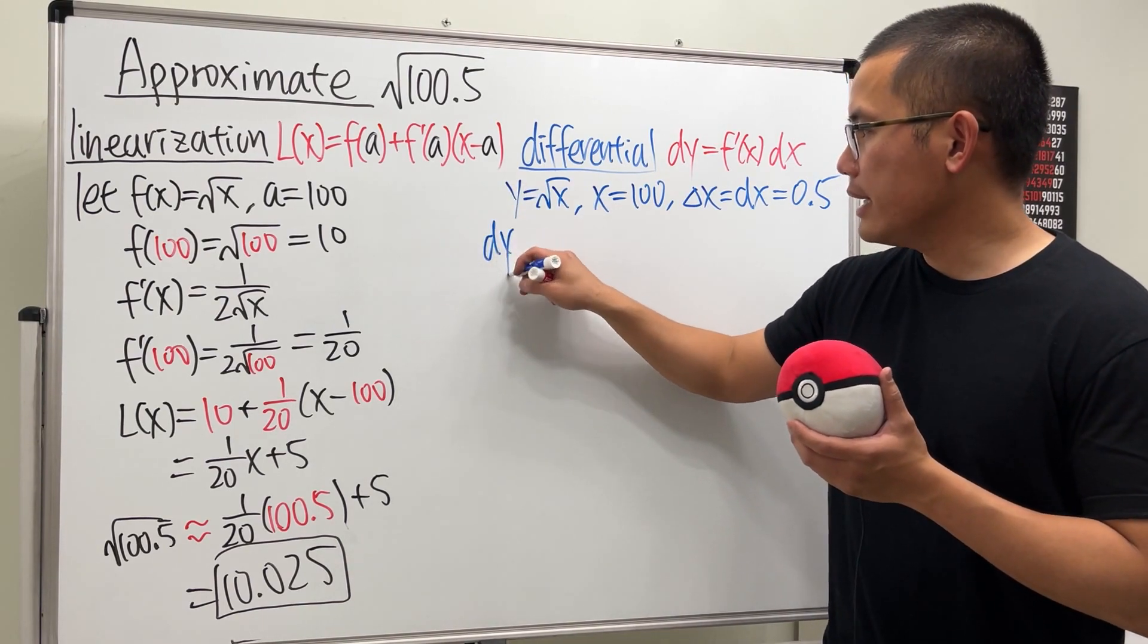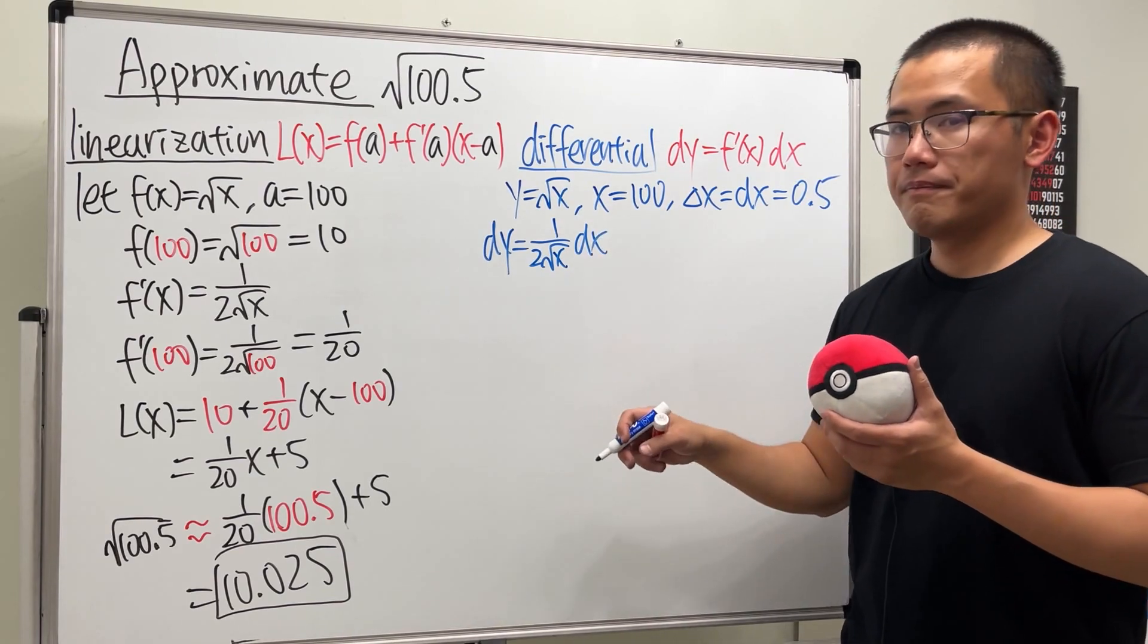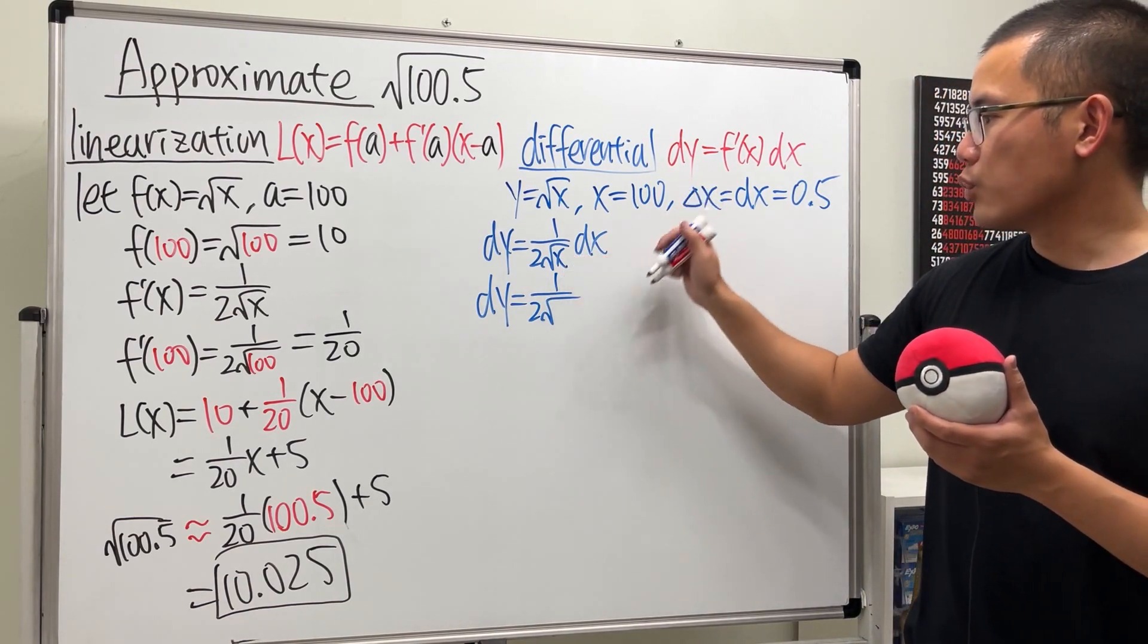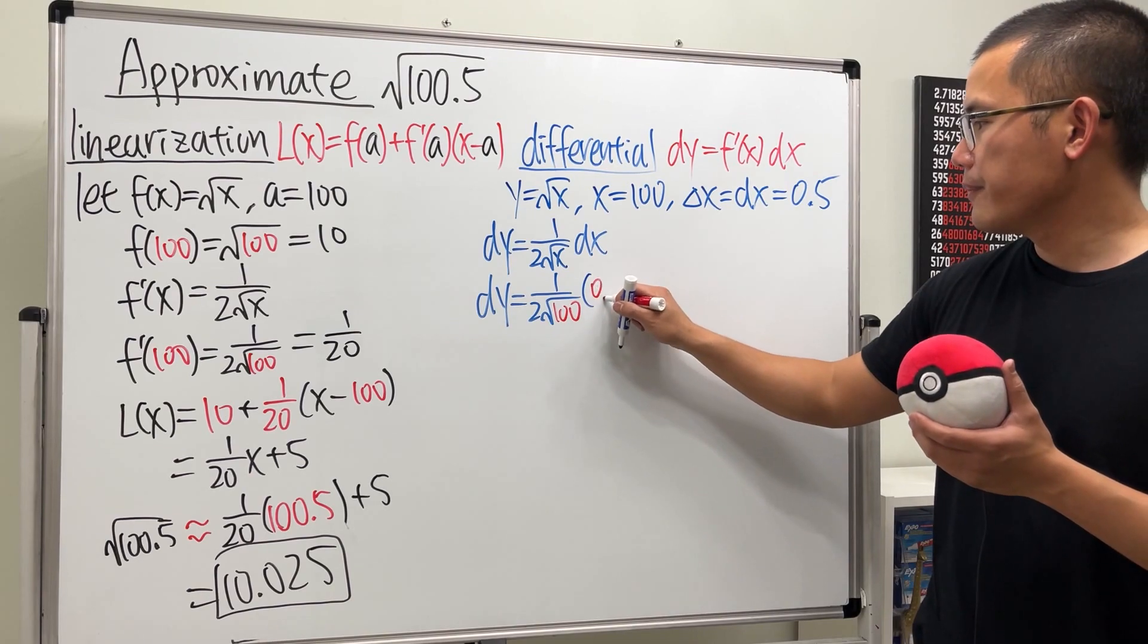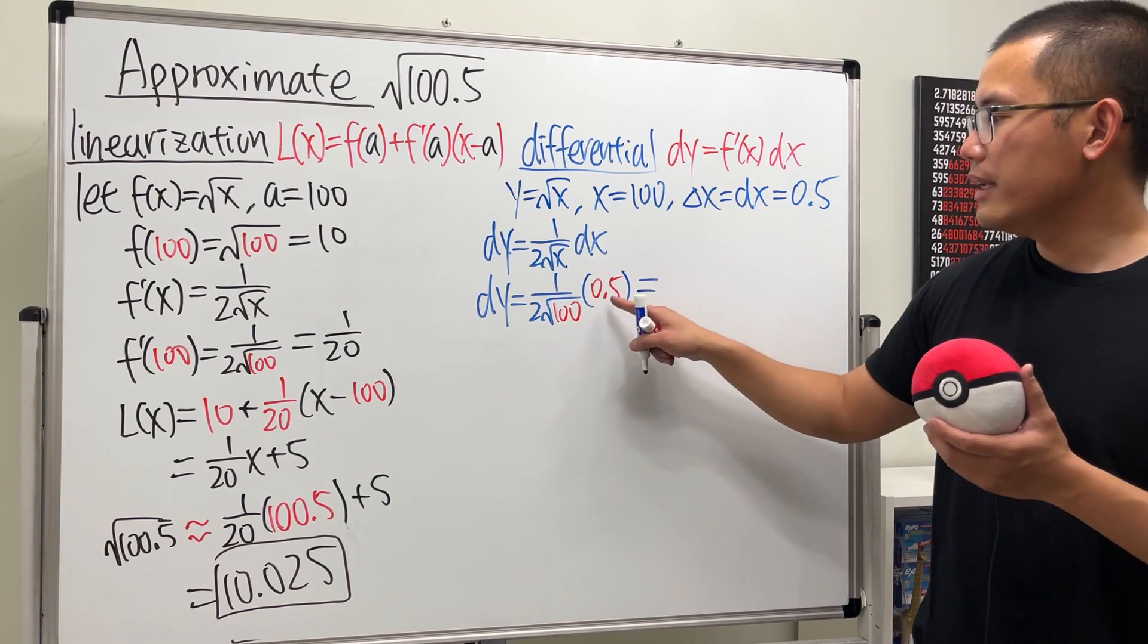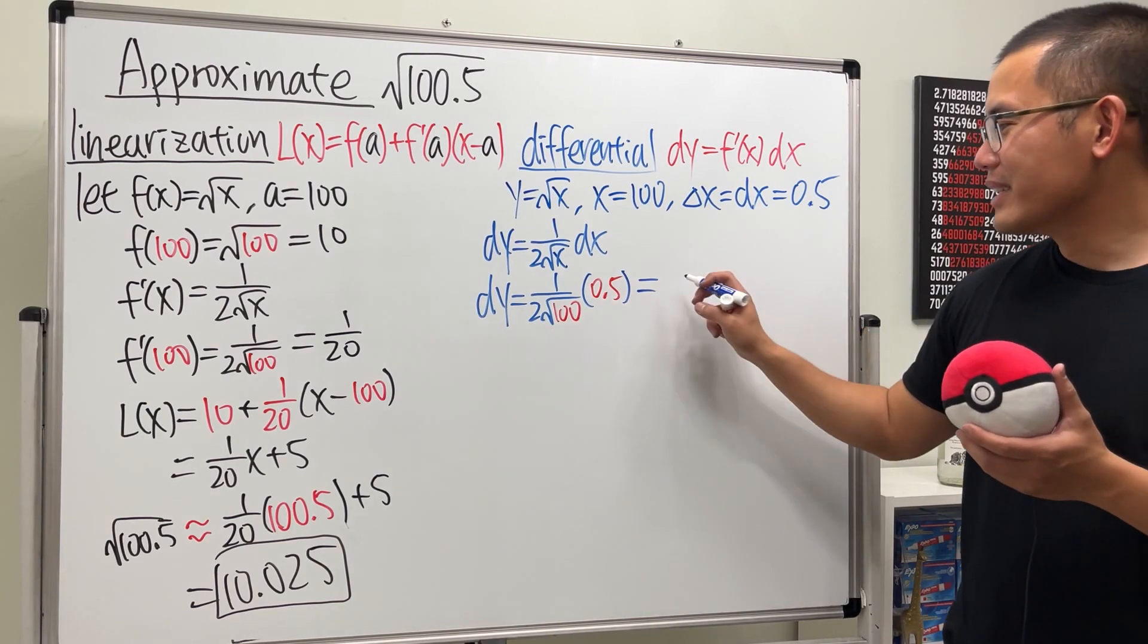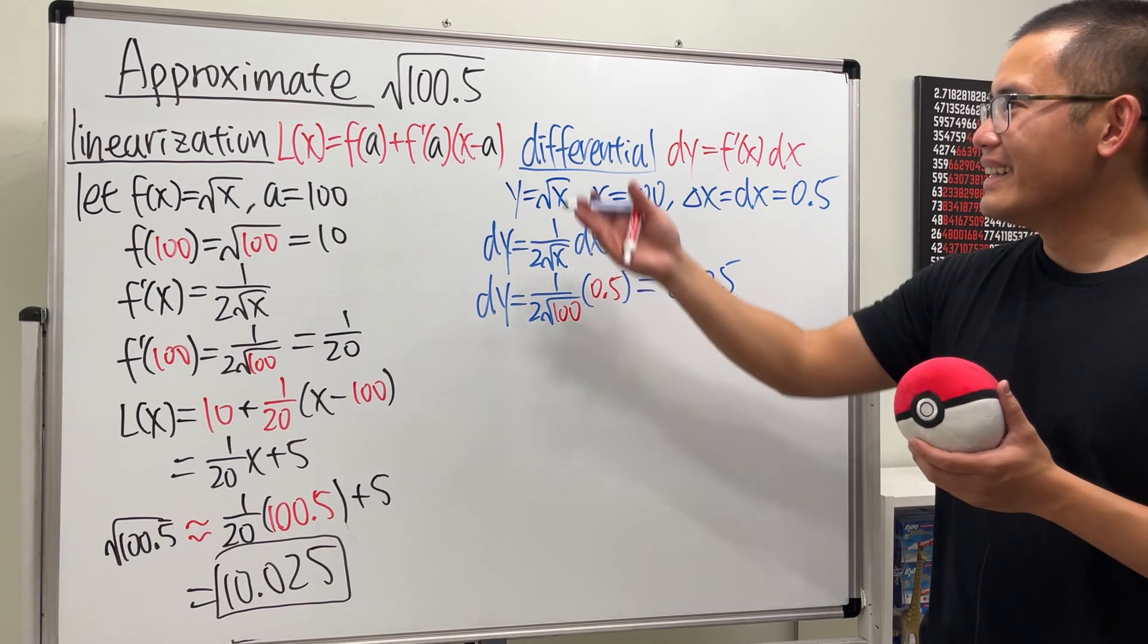Okay, so the derivative, dy equals 1 over 2 square root of x dx. And then plug in numbers. And then dy equals 1 over 2 times the square root, x is 100, and then dx is 0.5. Work this out, this is 20, and then this is 0.5. Divided by 20, we get 0.025.